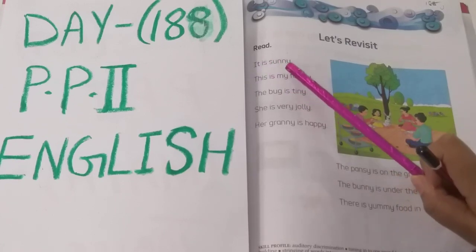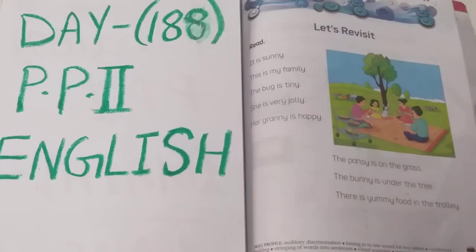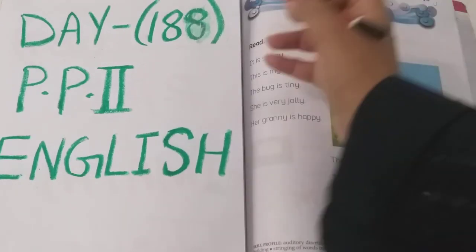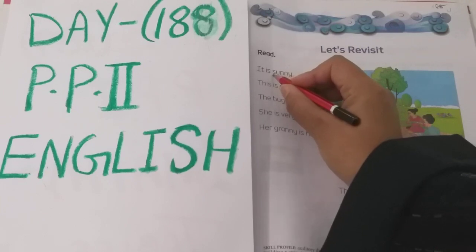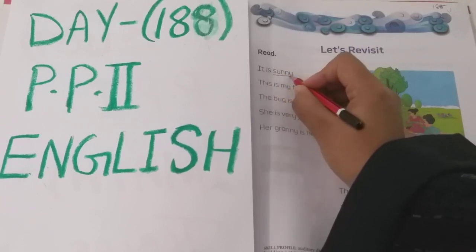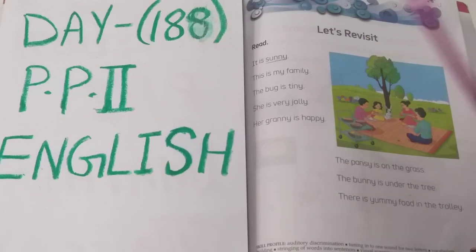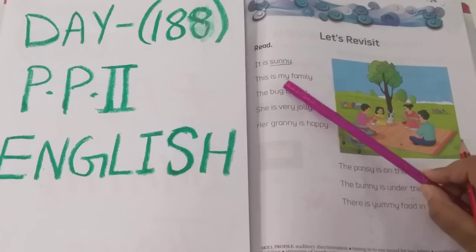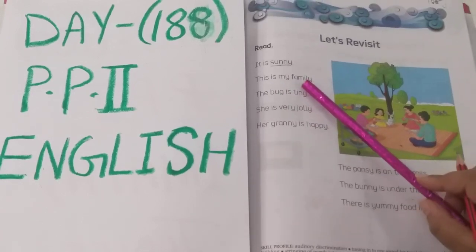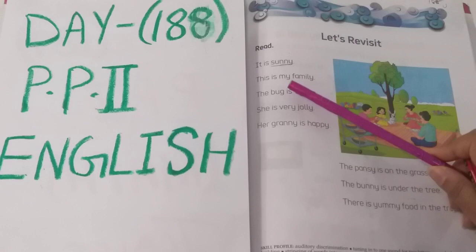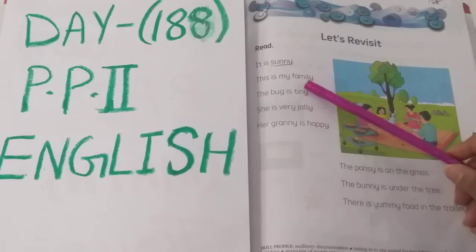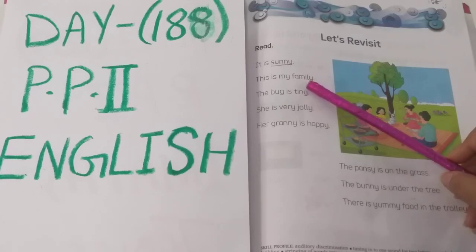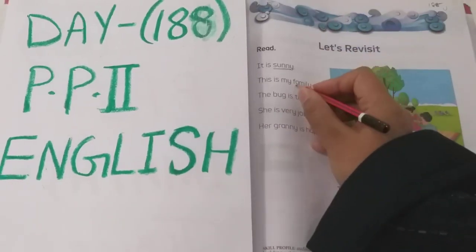It is sunny. So where is the E sound word, children? Here, in sunny, we are pronouncing it as E — sunny. Next: T-H-I-S, this. I-S, is. M-Y, my. F-A-M-I-L-Y, family. This is my family. Which is the word with letter Y pronounced as E sound? Family. We need to underline this.